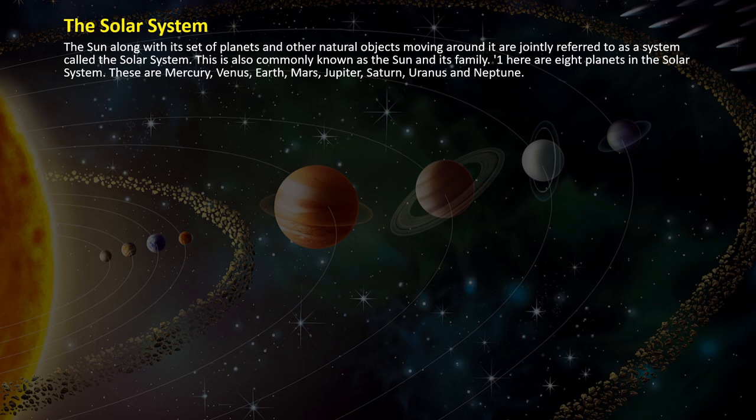There are eight planets in the solar system: Mercury, Venus, Earth, Mars, Jupiter, Saturn, Uranus and Neptune. Before there were nine planets but now we have eight only. We will be learning about each planet in detail.